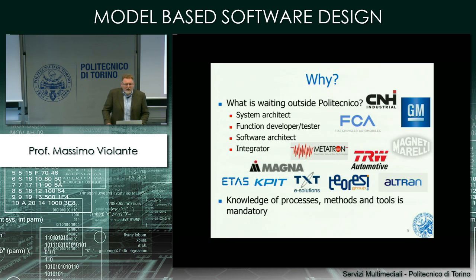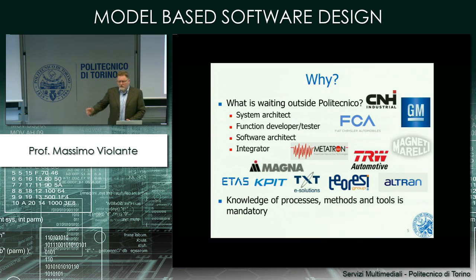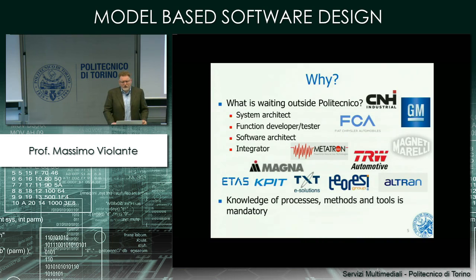Around the OEMs and Tier 1 suppliers there are Tier 2 companies that provide people or services, such as Ultran, Teresi, TXT, ETAs, and many other smaller companies. Having knowledge of the processes, methods, and tools needed in this domain is relevant for shaping a good CV appealing to these companies. If you are not looking for work in automotive, the content of this course is not useless — you will find the same procedures, technology, and methods in biomedical or aerospace, regulated under different standards like DO-178 instead of ISO 26262.